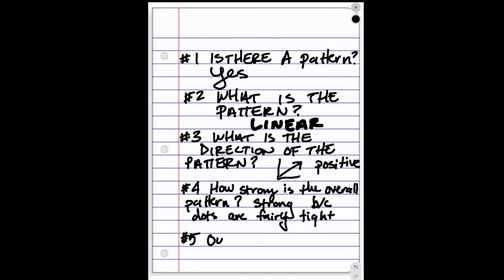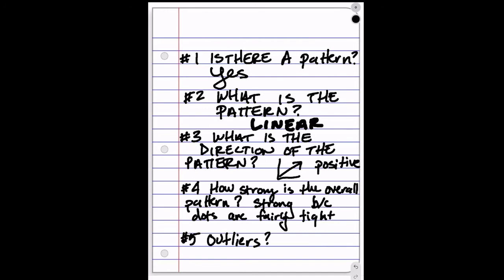When you say that there's an outlier, it's valuable for you to say where it is. So this is about, I don't know, 13 years of education and about $26,000, I would say. So it would be 13,26. Remember, that's how you write those coordinates.